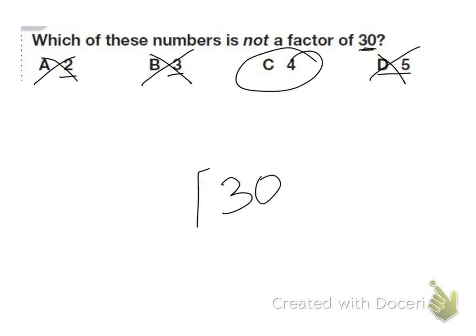So if I try to do that, 30 divided by 4, well, that can only go into it 7 times and that's 28. And so that leaves a remainder. So 4 is not a factor of 30.